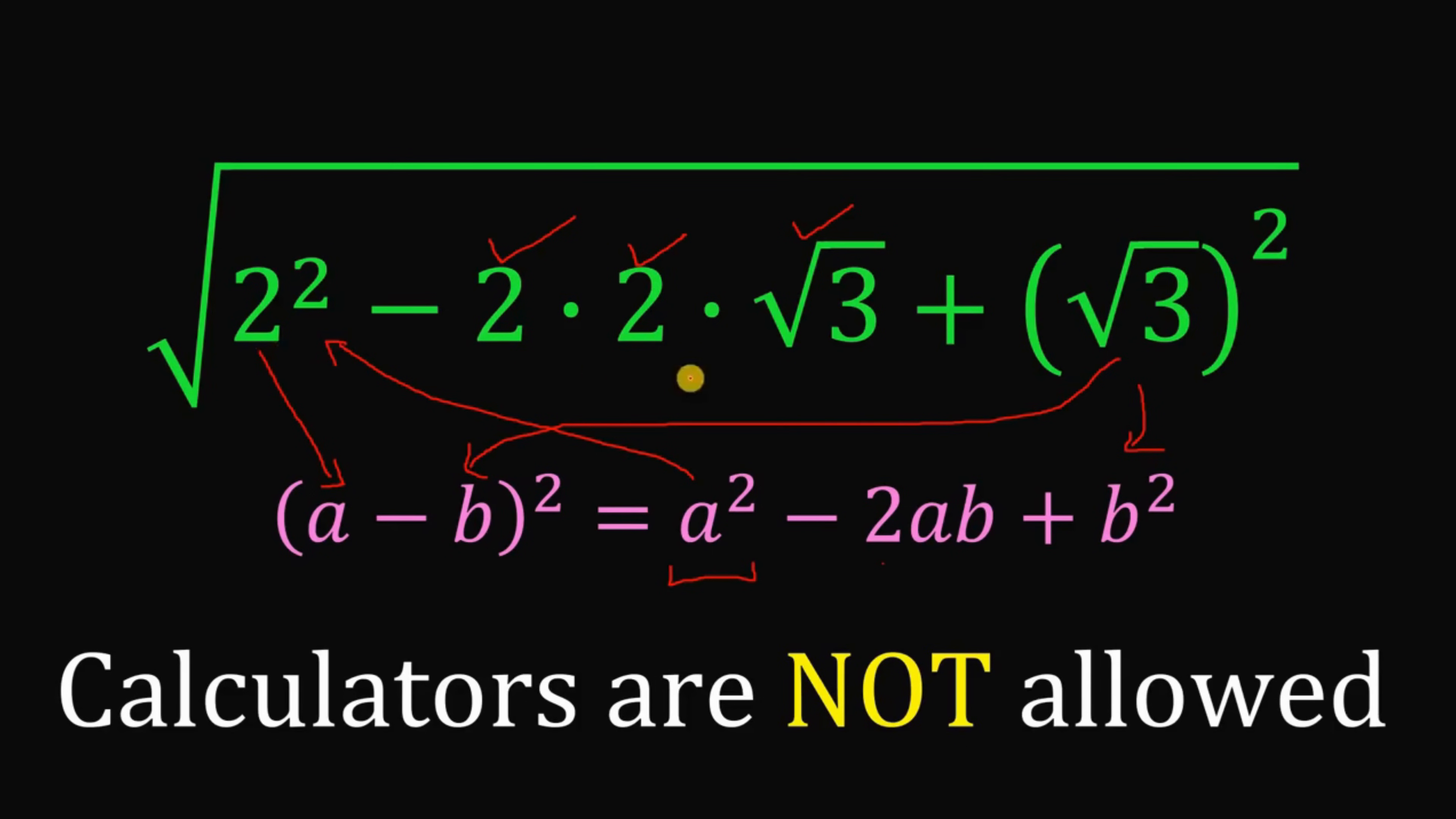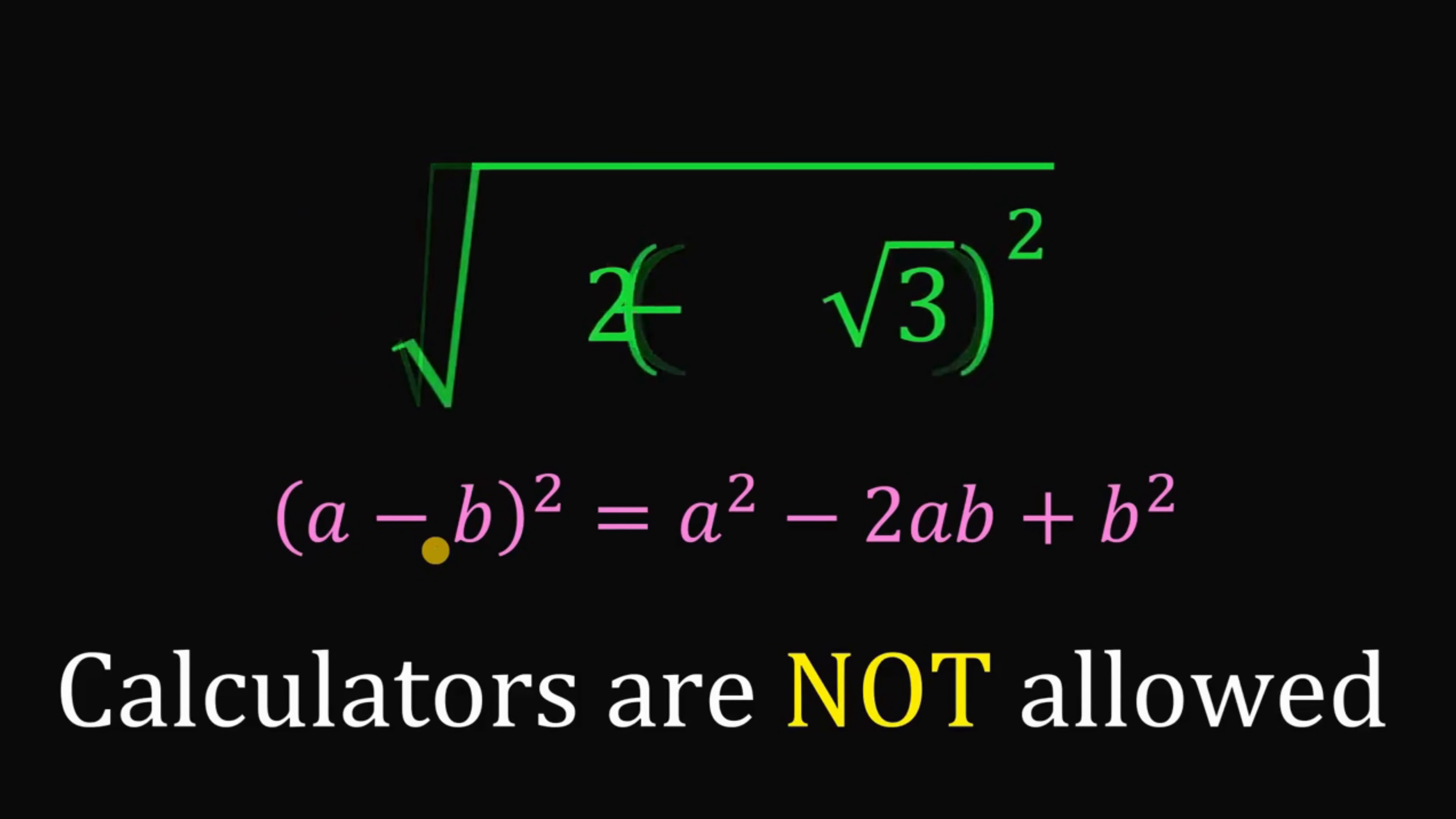Therefore, 2 squared minus 2 times 2 times square root of 3 plus square root of 3 quantity squared can be written as 2, which is the value of a, minus square root of 3 quantity squared, which is the value of b.